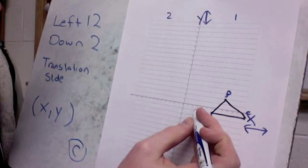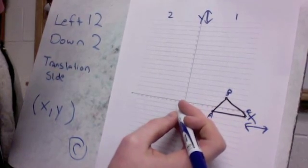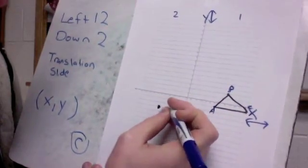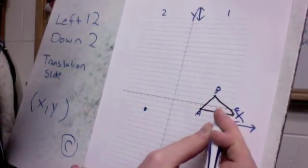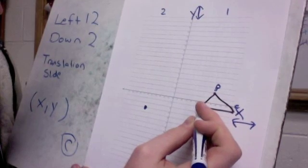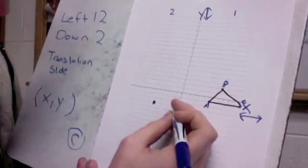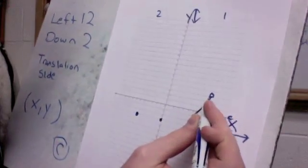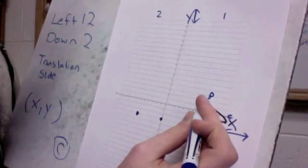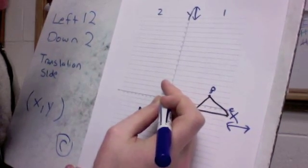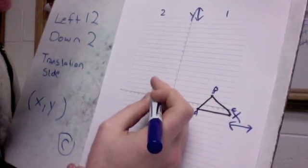Okay, 1, 2, 3, 4, 5, 6, 7, 8, 9, 10, 11, 12, and down 2. Same thing here. 1, 2, 3, 4, 5, 6, 7, 8, 9, 10, 11, 12, down 2. And then the same thing here. 1, 2, 3, 4, 5, 6, 7, 8, 9, 10, 11, 12, and down 2.